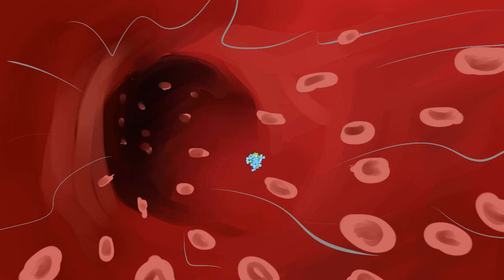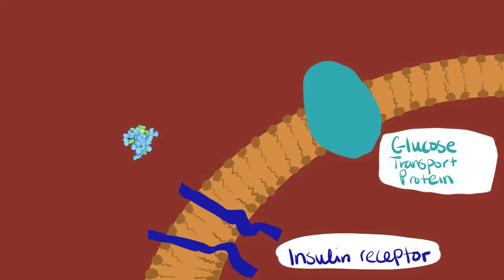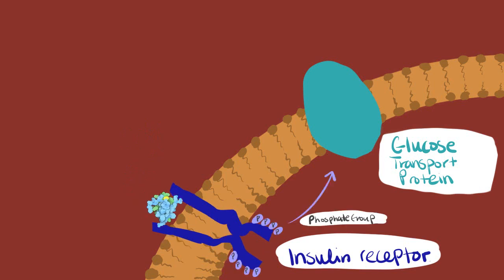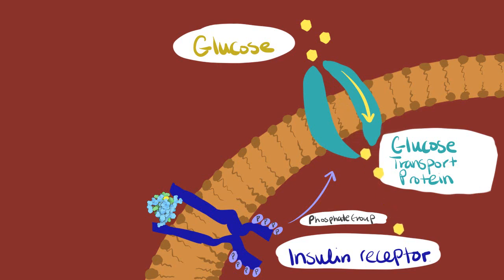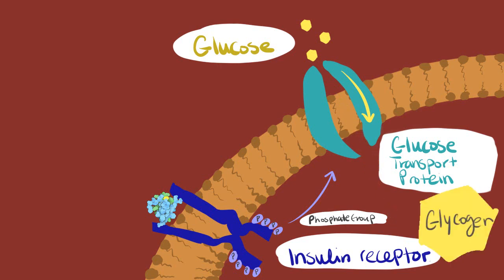The smaller shape of insulin is important for its function — it allows insulin to move quickly in the blood and be easily captured by cell surface receptors. When insulin binds to its target cells, it stimulates blood sugar uptake by body cells. Liver cells, in addition to taking in more sugar for metabolism, store the sugar as glycogen for use in low blood sugar conditions.